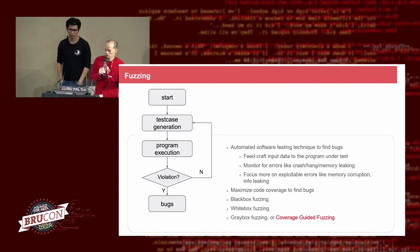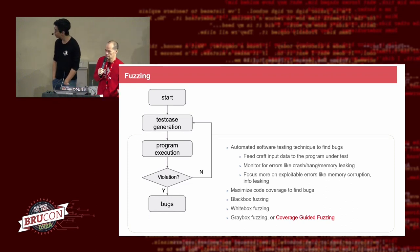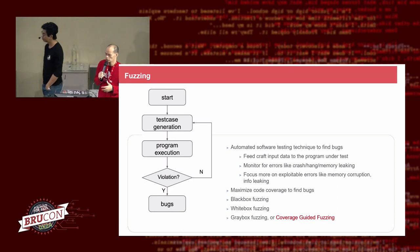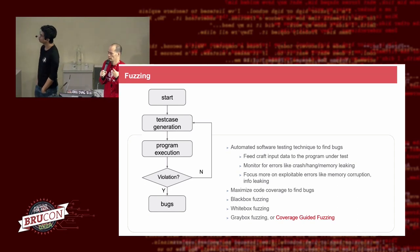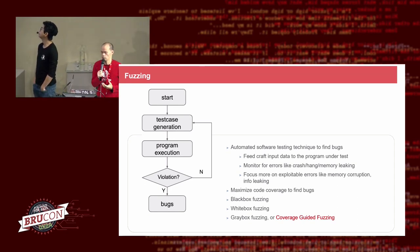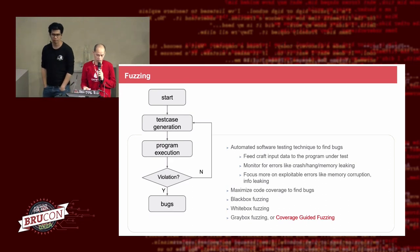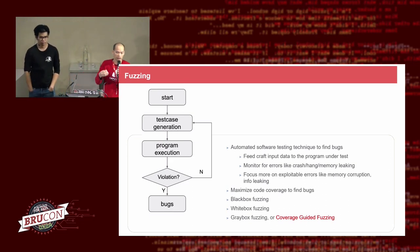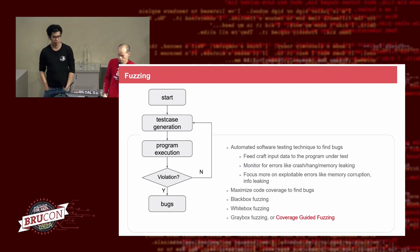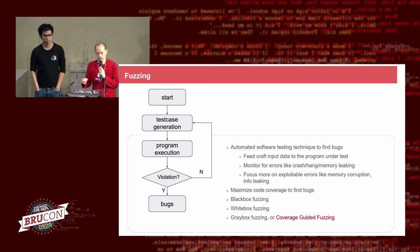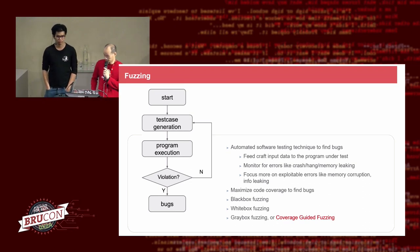One of the most important things for any fuzzer is that it needs good input, so that when the program runs on that input, it can exercise as much code as possible. On the other hand, the fuzzer needs to maximize code coverage to find bugs.